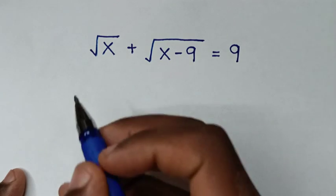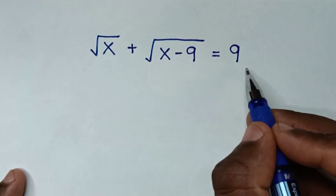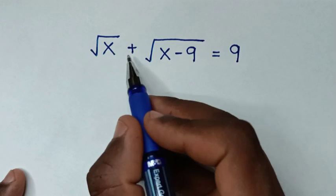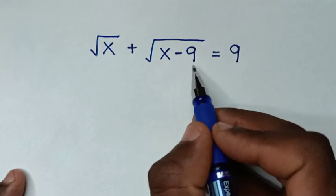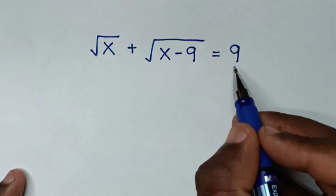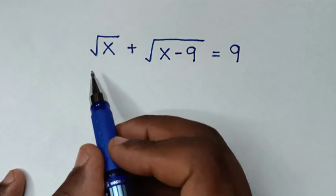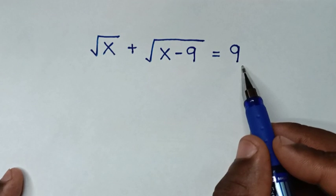Hello, you are welcome to solve this math problem, which is square root of x plus square root of x minus 9 is equal to 9. We need to find the value of x from this equation.